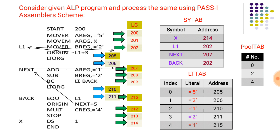The symbol table generated after pass one is as shown. Now for literals, they are easily identified with the equal-to sign. The first literal is 5 with index 0. Literal 5 has address 205. Once the LTORG statement is encountered, addresses of literals are generated — unless an LTORG or END statement is encountered, the assembler cannot generate addresses for literals. In the first pool we have two literals, 5 and 2, with addresses 205 and 206.